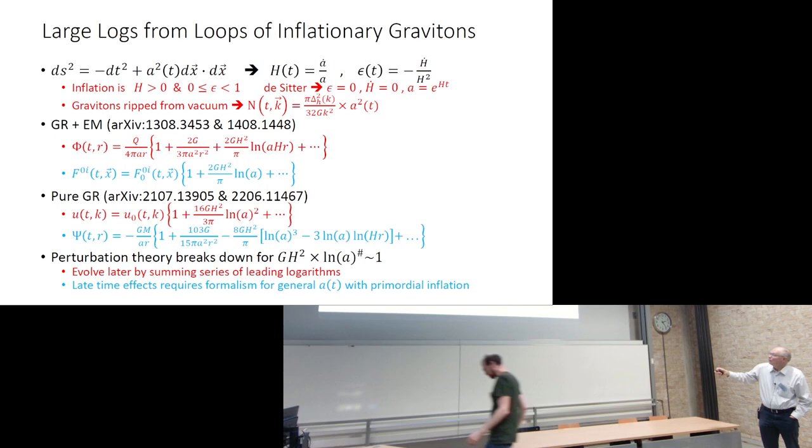There's the geometry of spacetime, Hubble parameter and first slow roll parameter. Inflation is defined as positive expansion with negative deceleration, which in terms of first slow roll parameter means epsilon is less than one. De Sitter is the special case of epsilon equals zero and that's an exponentially growing scale factor. One of the many fascinating things about accelerated expansion is that it literally rips quanta from the vacuum. The occupation number of a single wave vector and polarization of gravitons during inflation can be related to the potentially observable tensor power spectrum times A squared. So it's growing like a bat out of hell. You might expect that with this huge growth, you will see effects.